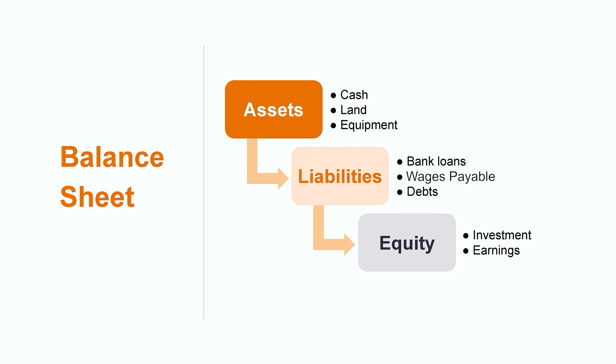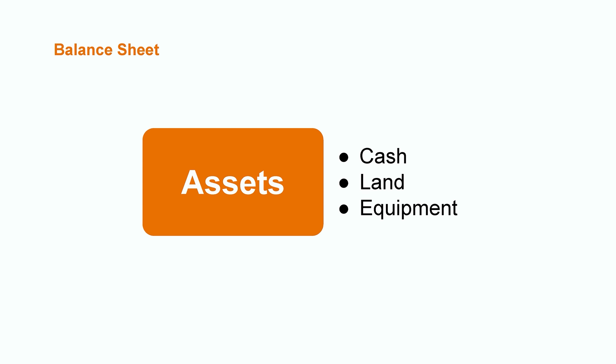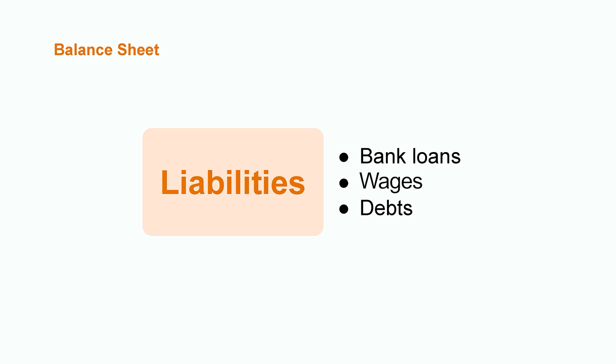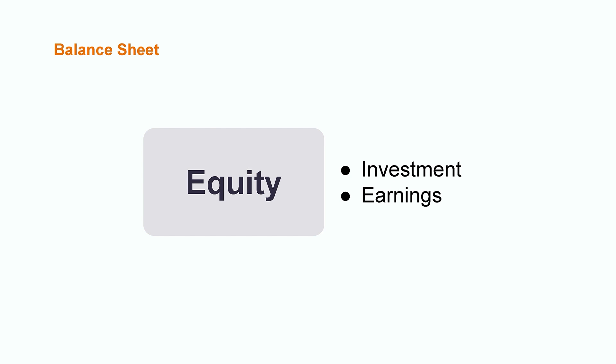You can think of the balance sheet as a snapshot of a moment in time that gives us an overview of an organization's financial health, broken down into assets, liabilities, and owner's equity. Assets are the resources the organization owns, such as cash, land, and equipment. Liabilities are debts that the organization has taken on, such as bank loans, wages owed to employees, or debts owed to suppliers. The last category is owner's equity, which is the value that remains with the owners, including investment that comes into the company and the earnings generated over time, also known as retained earnings.